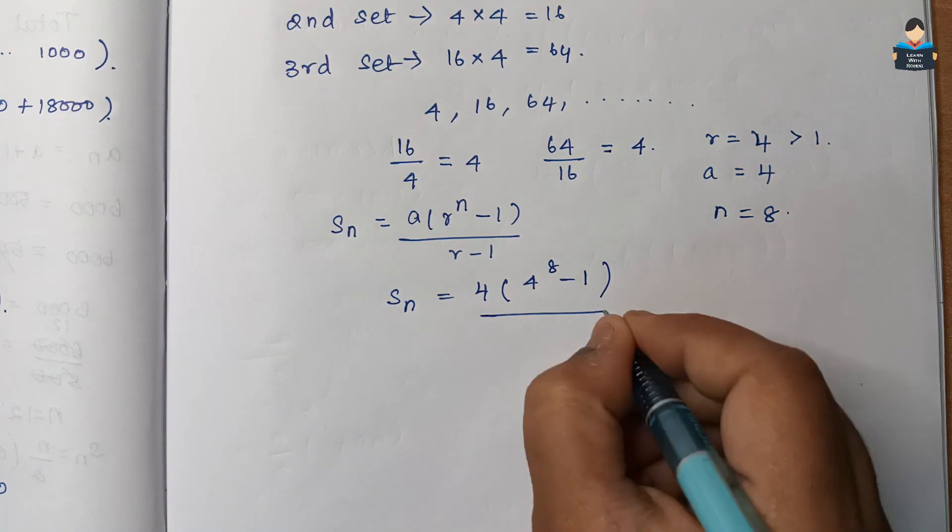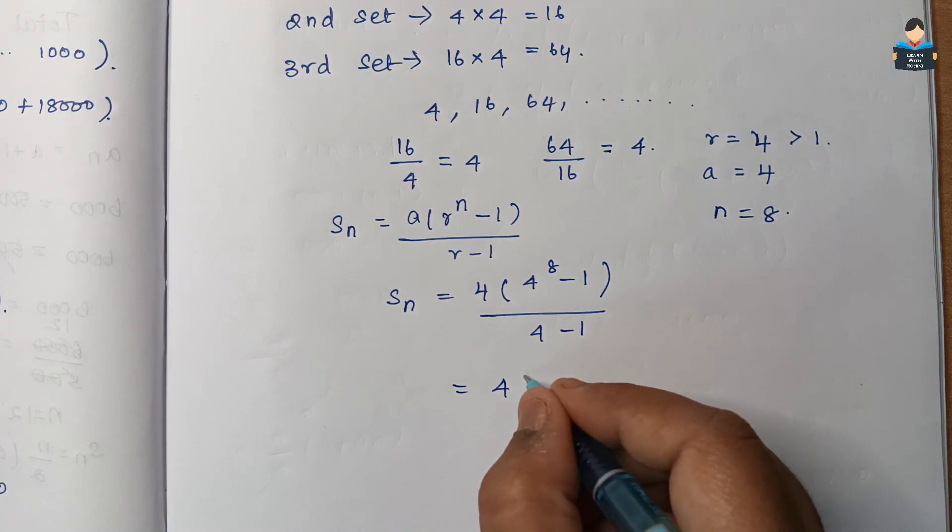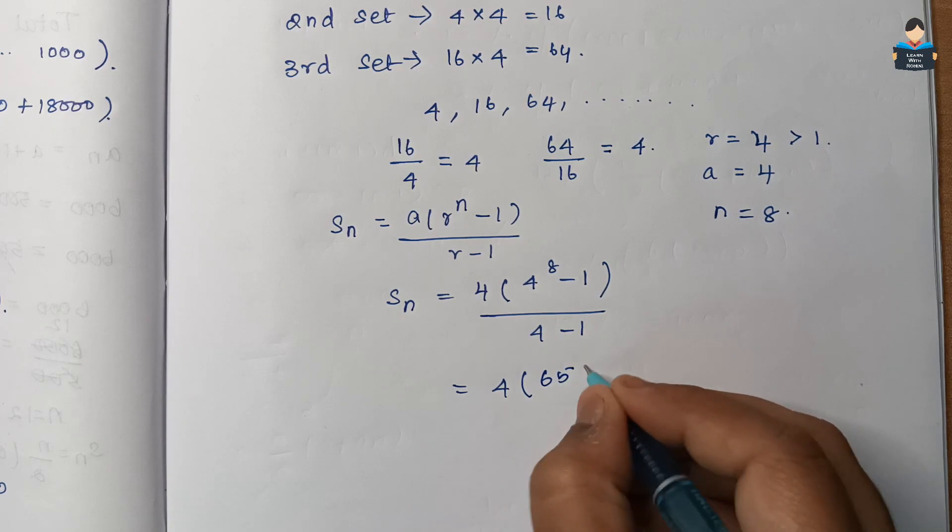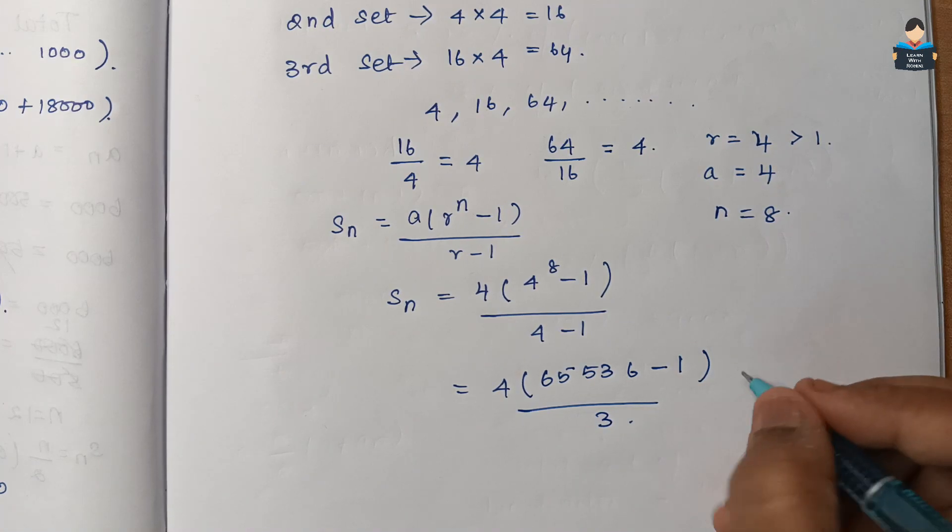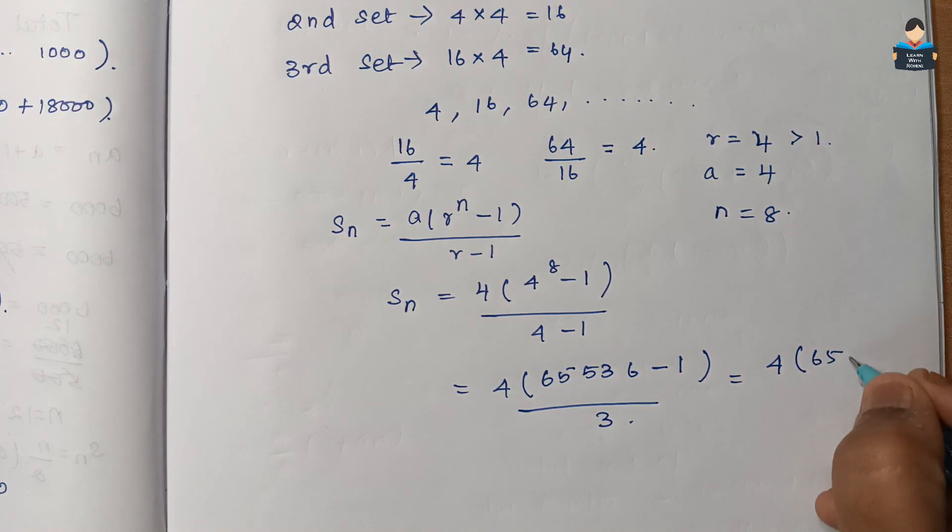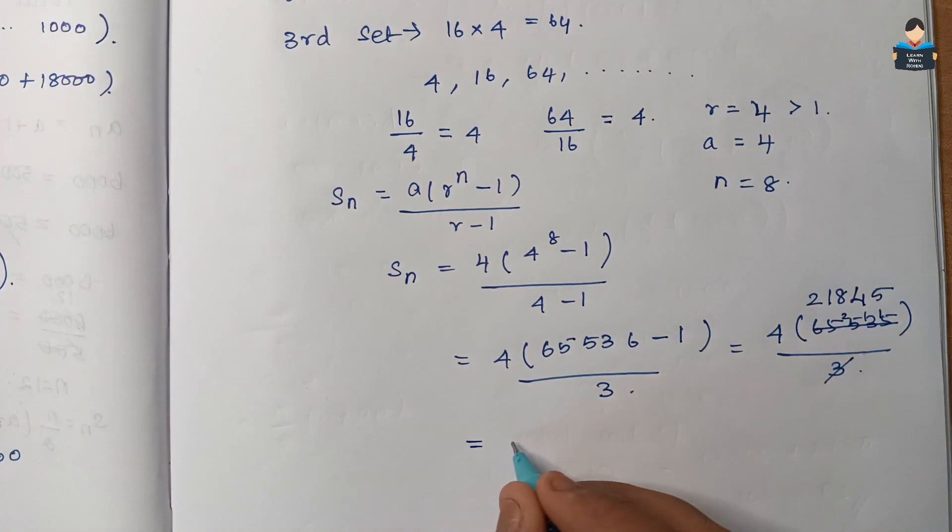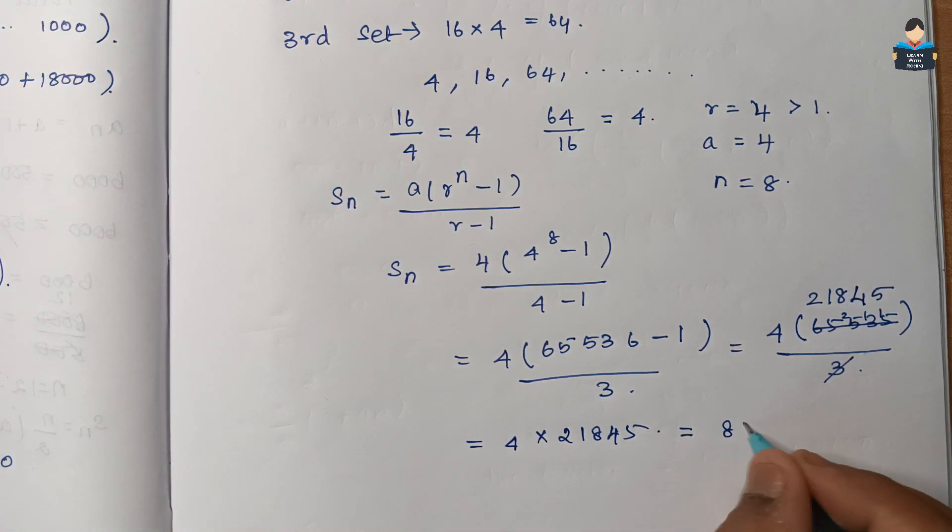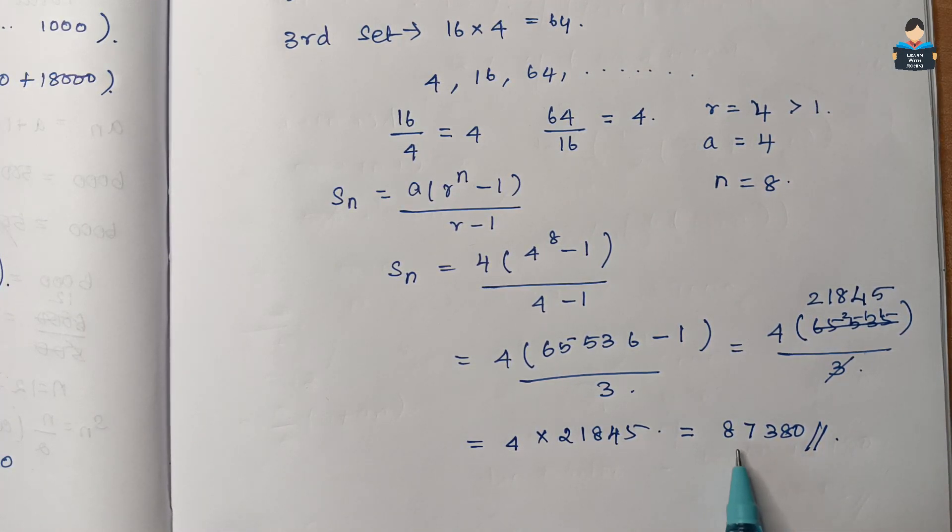Calculate 4 to the power 8 which gives 65,536 minus 1 by 3. Solve: 4 into 65,535 by 3. Cancel in 3 tables, gives 21,845 into 4. Multiply to get 87,380. This is the total number of letters in 8th set.